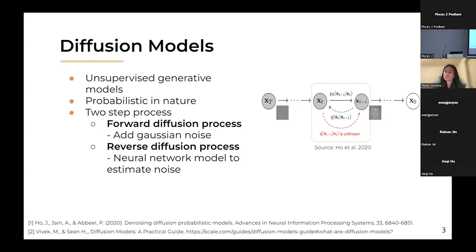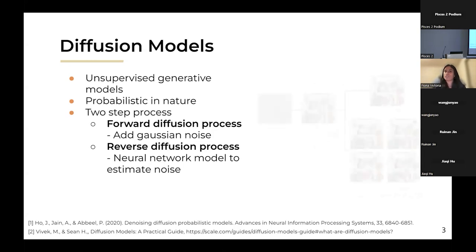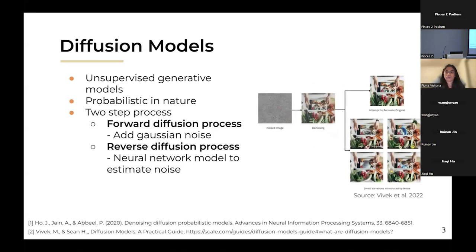Then you have a reverse diffusion process where you employ a neural network to estimate this noise and try to remove it, thereby getting the same data itself or different variations of the image that you see on your right. So if you were to take an image of a bunch of vegetables and add noise to it and then denoise it, you would get a lot of different variations — and that's how diffusion models work.